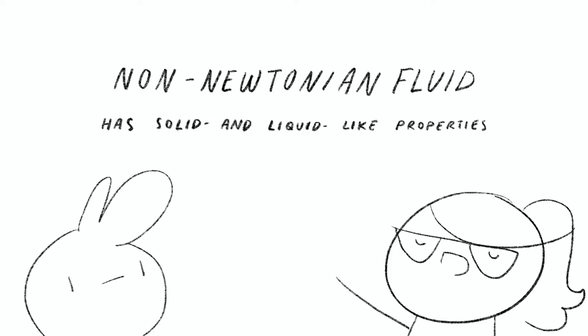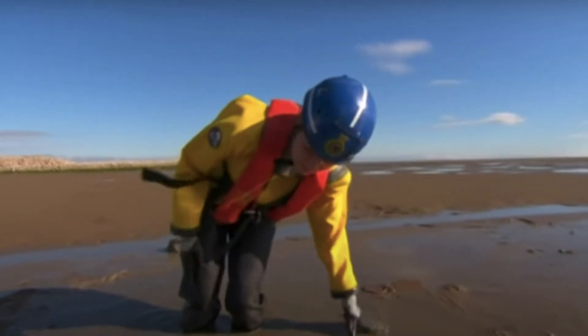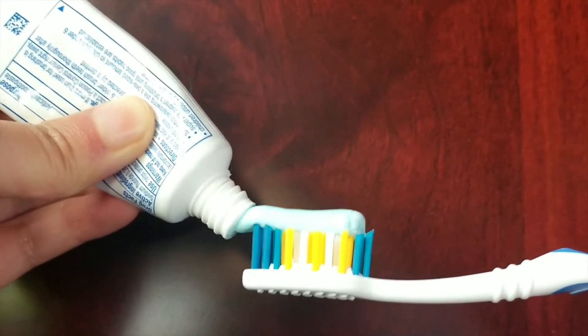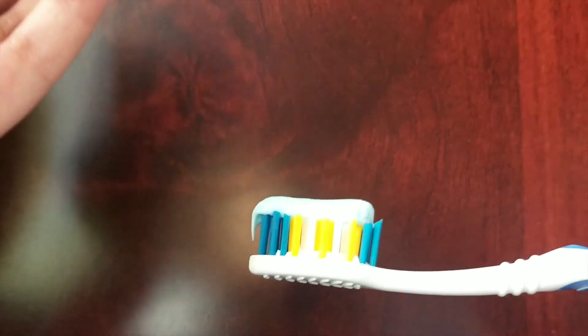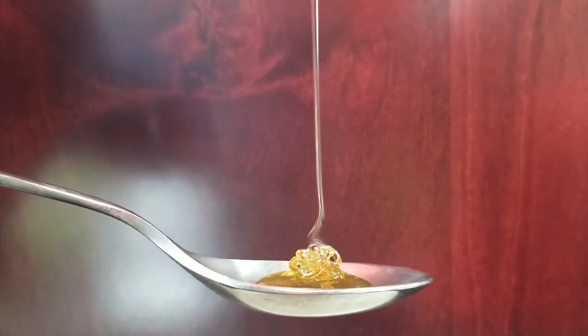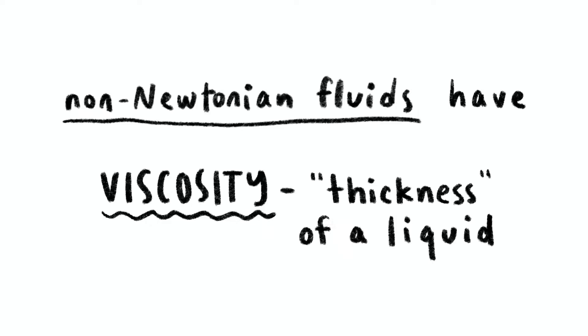Quicksand is a non-Newtonian fluid. That means quicksand can either become solid-like or liquid-like when you move around it. Toothpaste, cornstarch with water, and honey are other examples of non-Newtonian fluids. They are all viscous liquids. Viscous means how thick a liquid is or how much it resists flow.